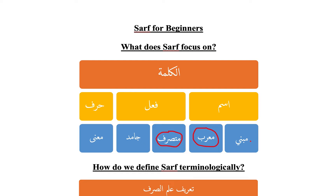As for al-fi'l al-jamid — like ni'ma, bi'sa, laysa, and so on — these verbs can't be conjugated. Like with darab, we said: yadribu, idrib, daribun, madroobun, la tadrib, il-akhirihi. You can't do that for laysa, ni'ma, and bi'sa — these are the af'al al-jamidah.